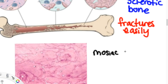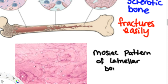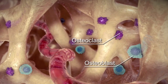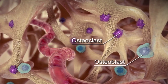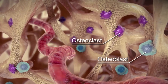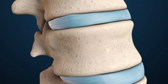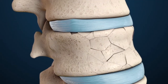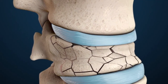The end result is thick sclerotic bone that fractures easily, because these bones have impaired integrity and are unable to withstand the physical strain and pressure from even normal activities. Histology reveals a mosaic pattern of lamellar bone, because osteoblasts lay down as much bone as possible in a rush, resulting in impaired integrity and increased risk of fractures.